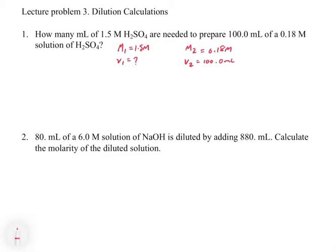Once I have this set up, I can go to my equation. The nice thing is it doesn't matter what units of volume I have, because since it's M1V1 equals M2V2, they're going to cancel out anyway. I can plug in milliliters or liters, it doesn't make a difference. If you feel more comfortable, you can convert to liters throughout the process, but you don't have to. So we have 1.5 molar times V1 equals 0.18 molar times 100.0 mls.